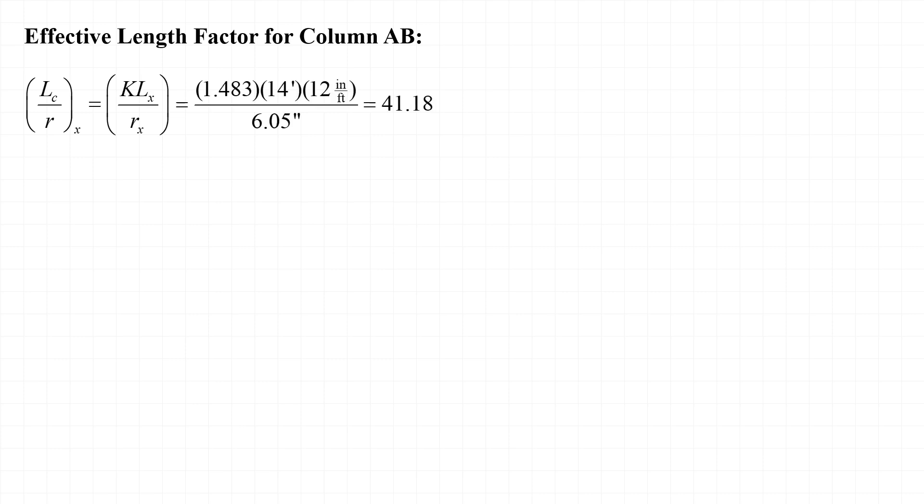Using this value and K equals 1.483, we find that the slenderness ratio for column AB is 41.18. This is less than 200 as is required by chapter E of the AISC specification. Note that normally we would compare the slenderness ratios for the two axes, the X and the Y axes, to determine which axis controls flexural buckling. In this case, however, we were instructed to consider only buckling about the X axis, so KL over R with respect to the Y axis was not calculated.